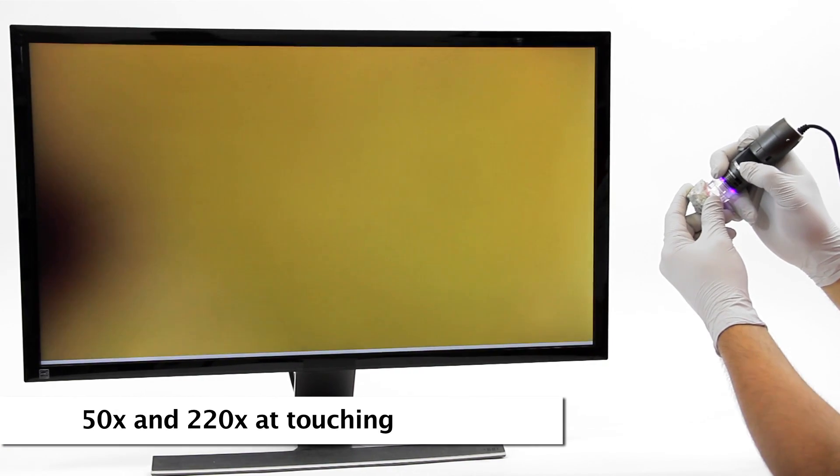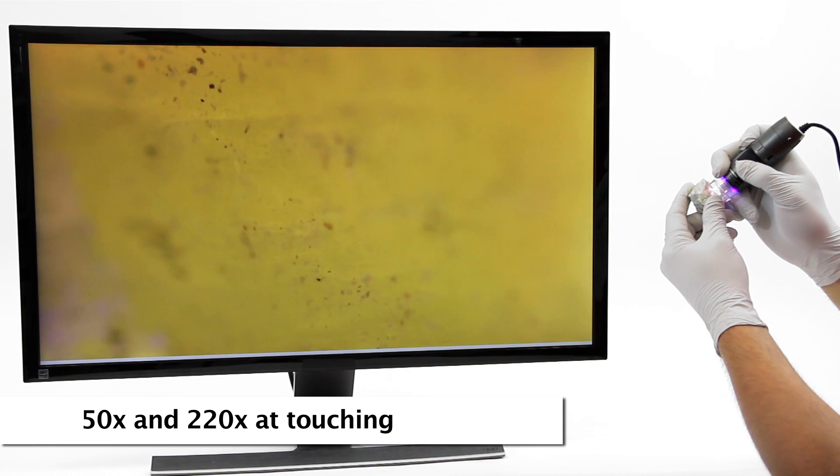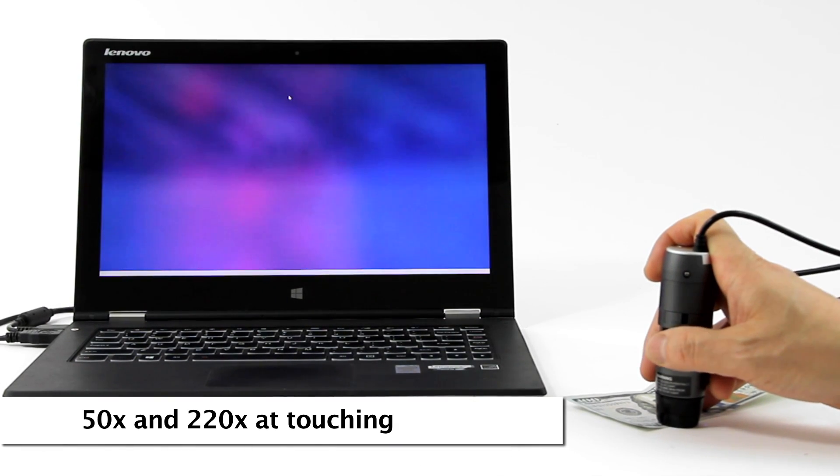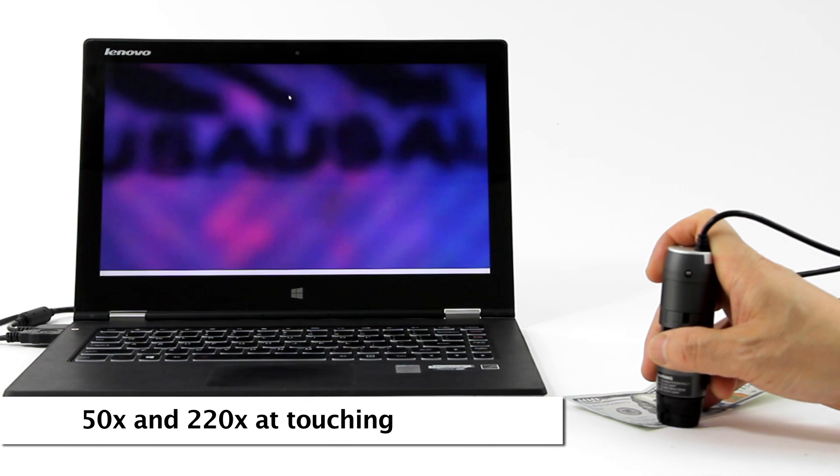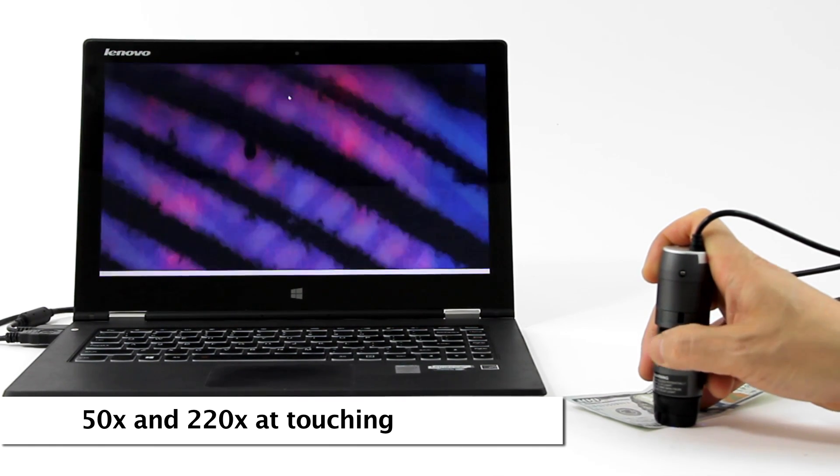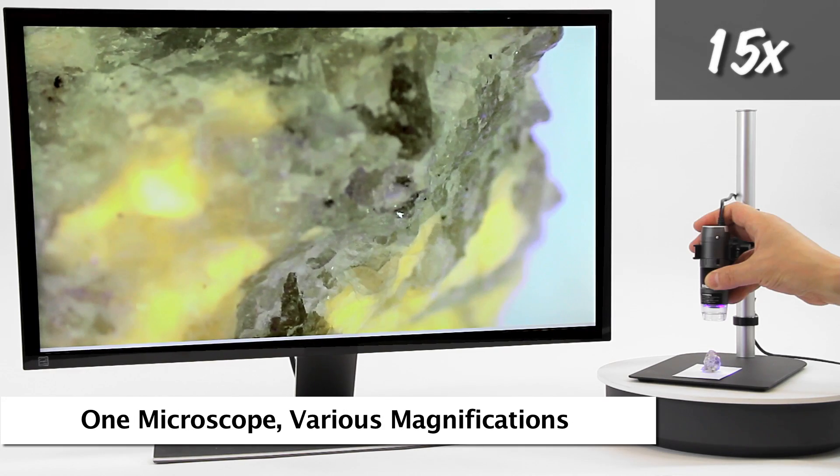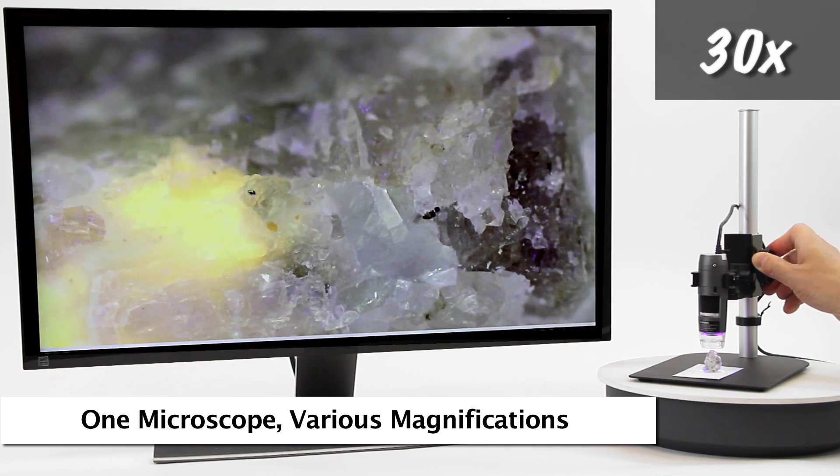Standard Dynolite working distance allows for 50 times and 220 times magnification when the end of the Dynolite nozzle is in contact with the object being viewed. These are examples of the standard working distance and corresponding magnification.